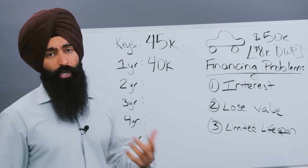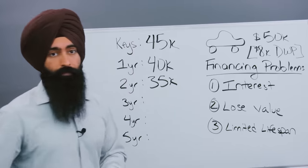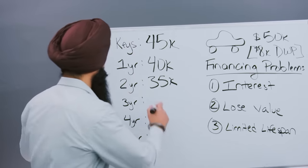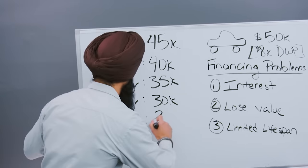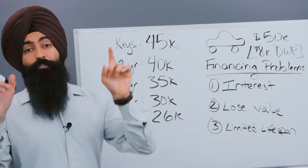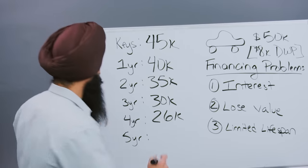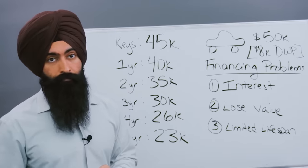After two years, this car is going to be worth around $35,000. After three years, this car is going to be worth around $30,000. After four years, this car is going to be worth around $26,000. And after five years, when you finally pay this car off, it's going to be worth around $23,000.